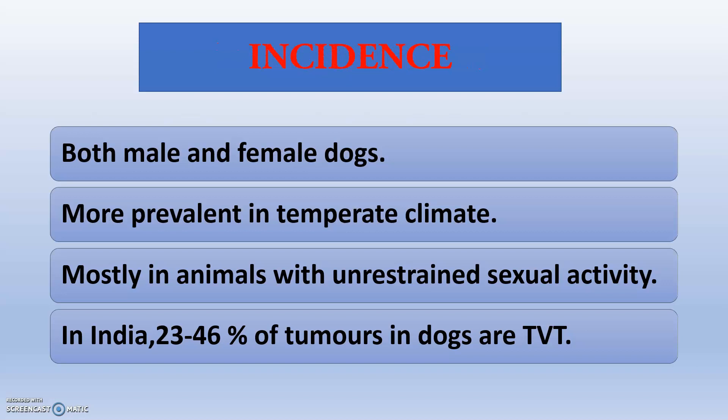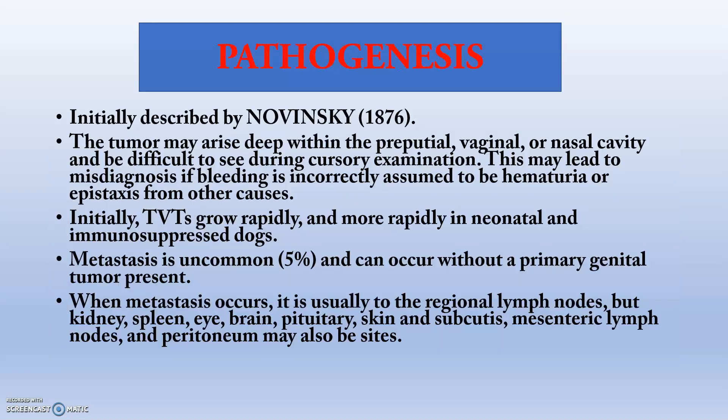Both male and female dogs can get TVT and it is more prevalent in temperate climates, mainly found in animals with unrestrained sexual activity. As part of an animal birth control program, we have to completely control the sexual activity of animals — uncontrolled sexual activity exhibitors will have a high chance of getting TVT. In India, 23 to 46 percent — nearly 50 percent — of tumours in dogs are TVT.